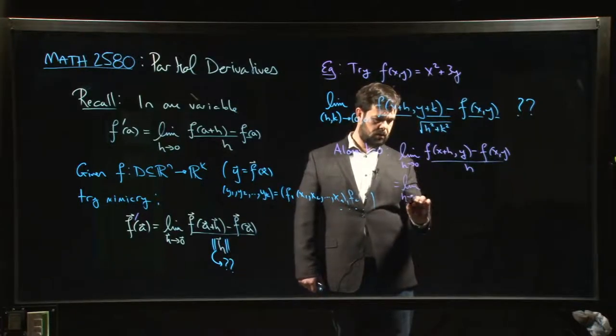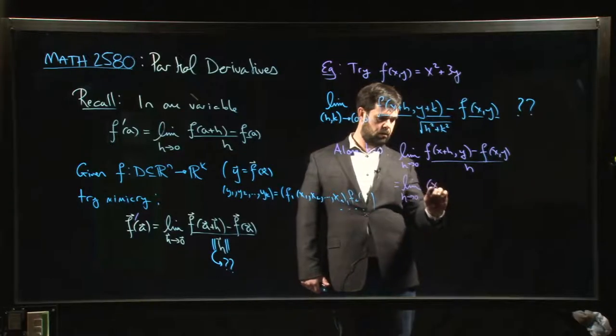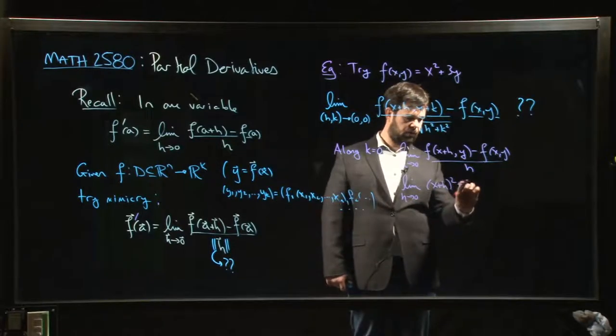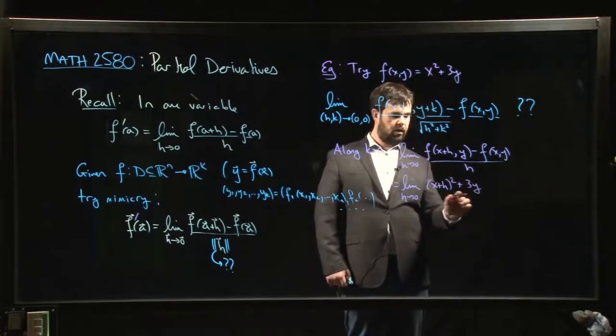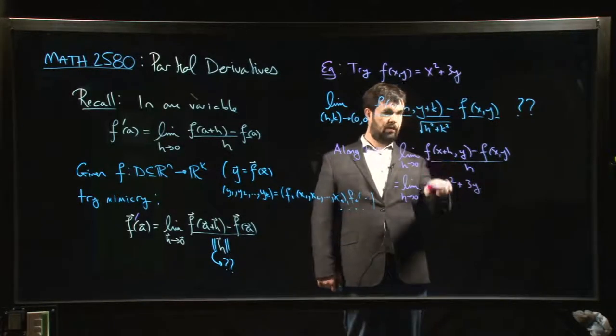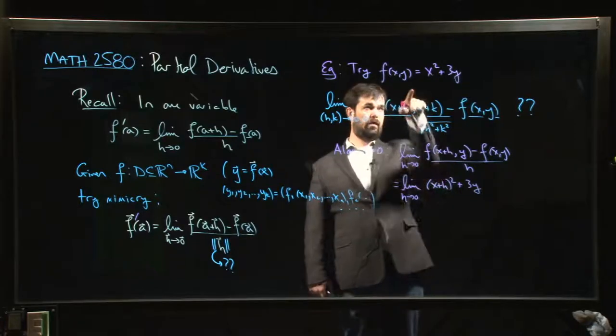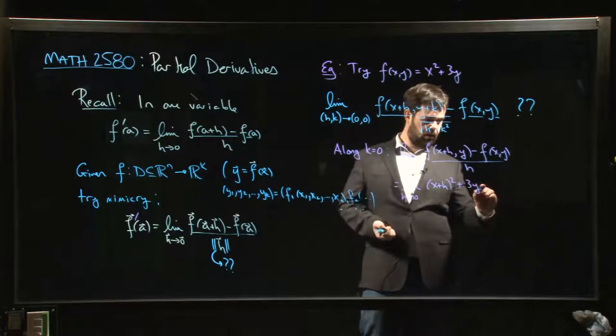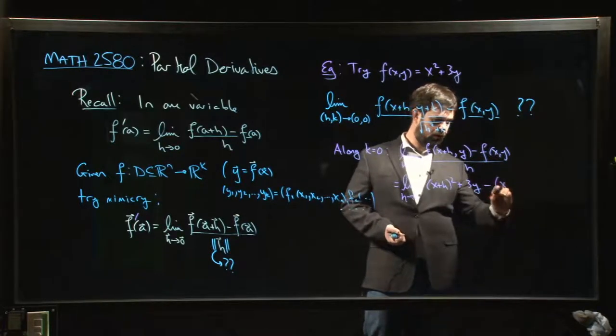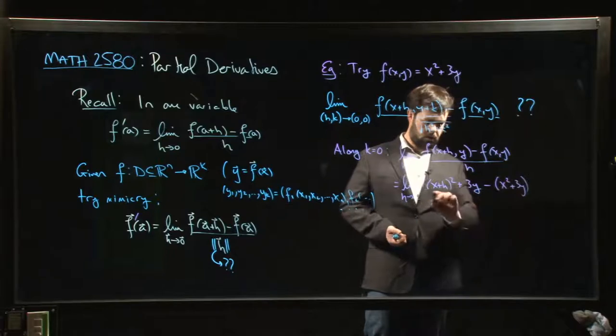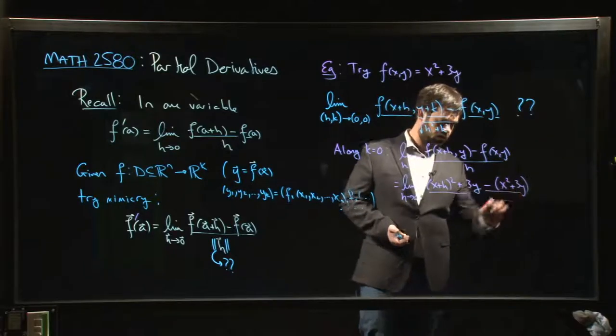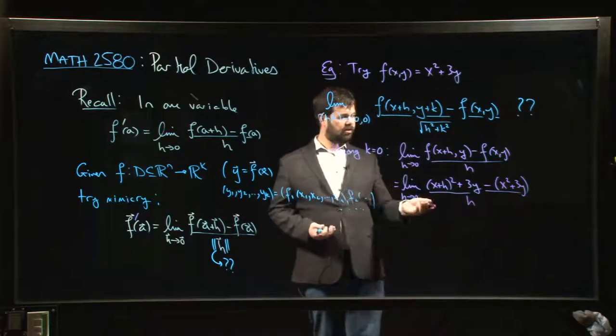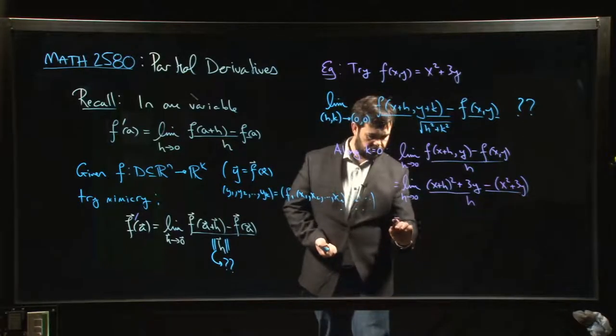This looks like the limit as h going to zero of (x plus h) squared plus 3y—so this bit here is what I get from f of (x plus h, y). I put x plus h in for the x there, 3y is still 3y—subtract f of (x, y), which is x squared plus 3y, over h. And you'll notice that the 3y's cancel out.